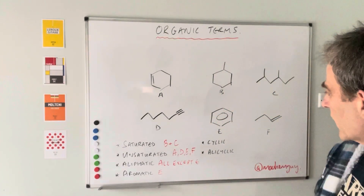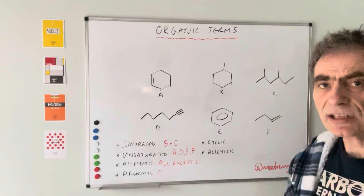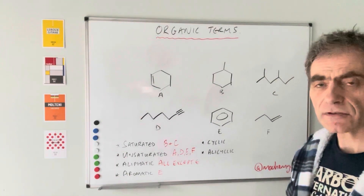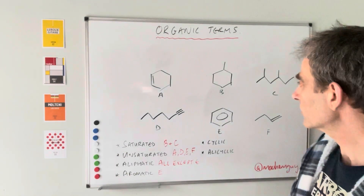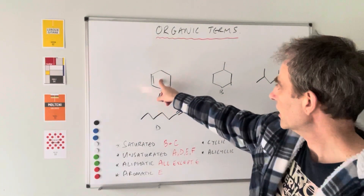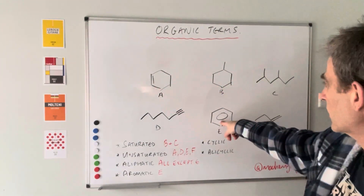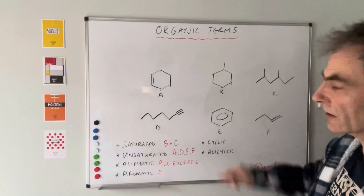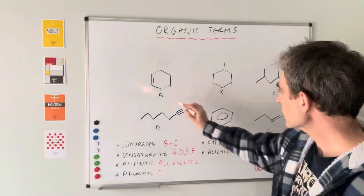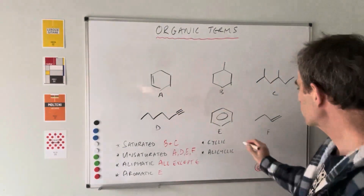Cyclic literally just means it's a ring of some description. We've got a ring here, a ring here, and that's a ring as well. So the cyclic ones are A, B, and E.